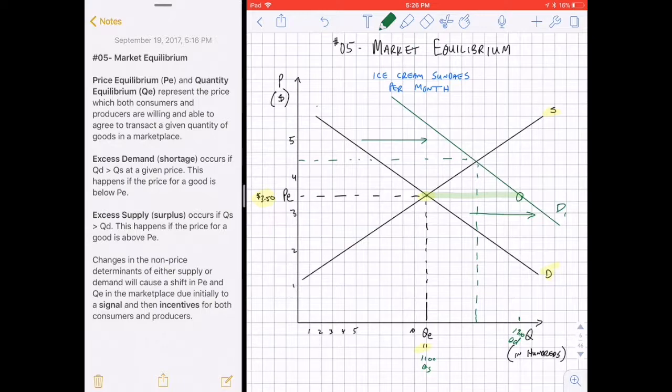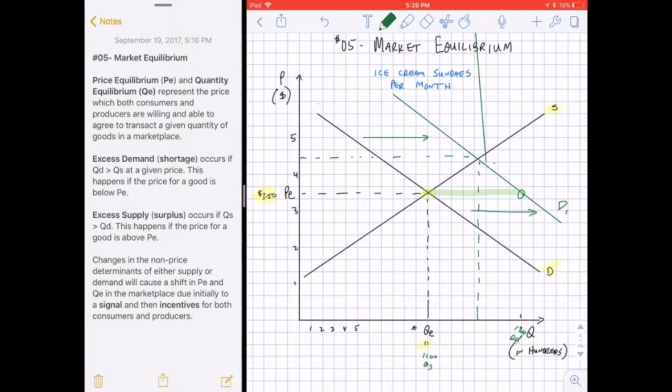However, if consumers are willing and able to pay a higher price, and producers are willing and able to supply at a higher price, both consumers and producers can win. With this new equilibrium price, ice cream sundaes now, during the heat wave, might be bought and sold for $4.50. That is clearly an incentive to producers. They can produce more ice cream sundaes at a higher price and make more revenue.